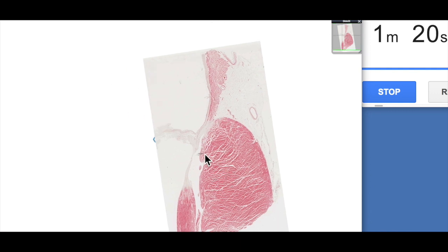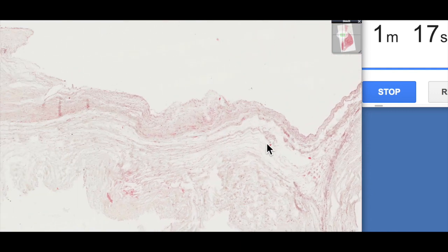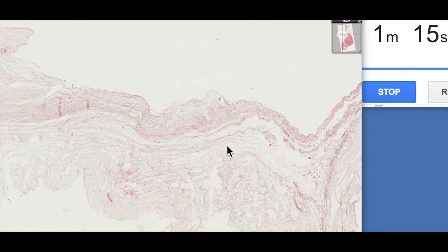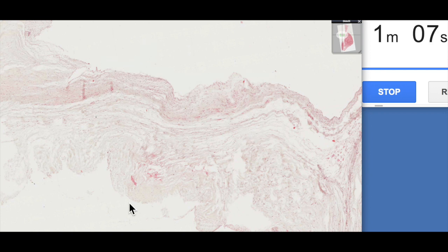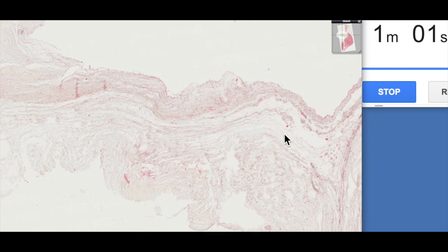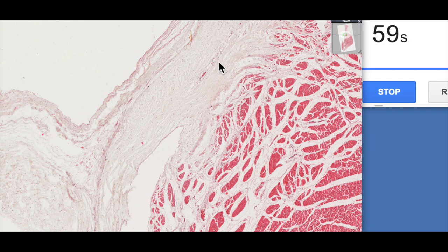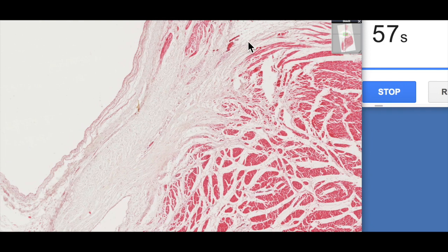The atrioventricular valve is made up of basically, you can think of it as an endocardial sandwich. We've got two layers of endocardium, one on the atrial side, one on the ventricular side, and then found in between is the connective tissue of the fibrous skeleton of the heart.